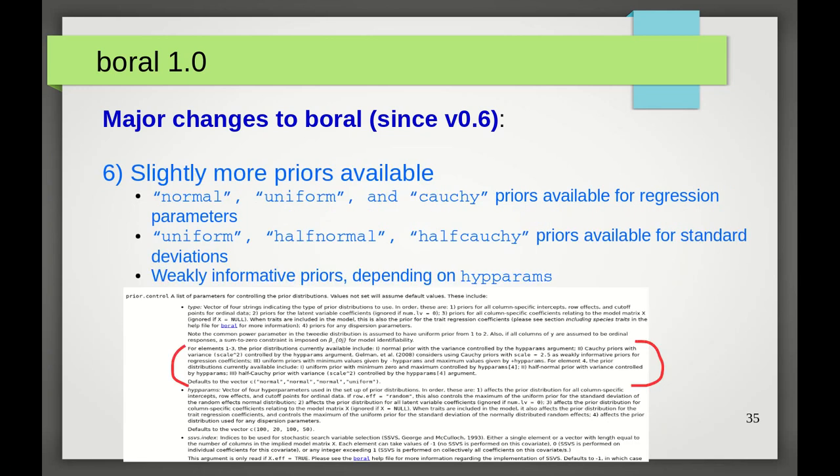Number six. Priors. After some feedback from users, the range of prior distributions in boral has now been expanded, slightly. So far, all versions of boral have used normal priors for stuff like regression coefficients, and uniform priors for things like standard deviations and over-dispersion parameters. Now, in boral version 1.0, normal, uniform, and Cauchy priors are available for regression coefficients, and uniform, half-normal, and half-cauchy priors for standard deviations and over-dispersion parameters.